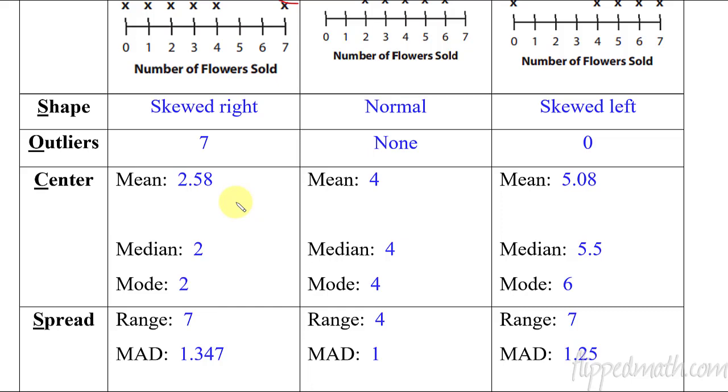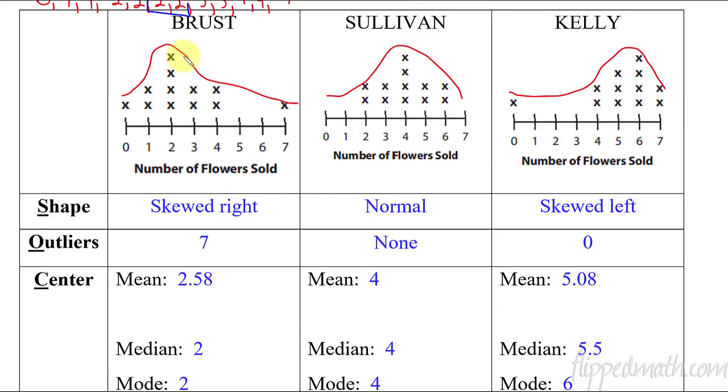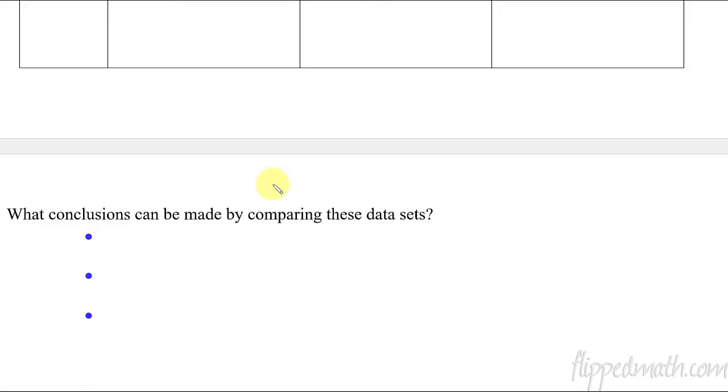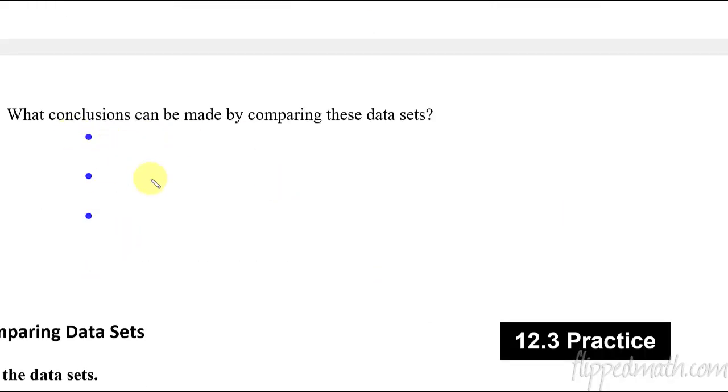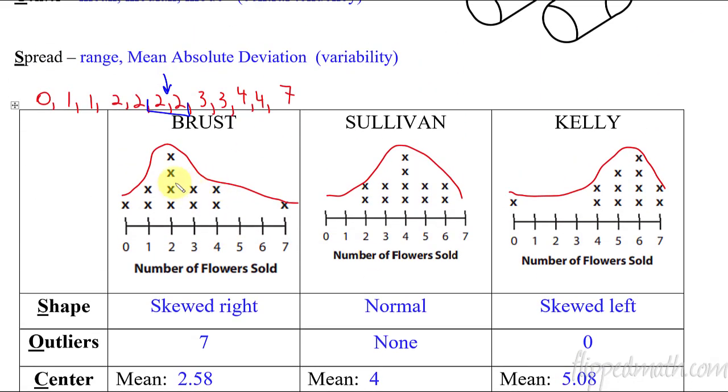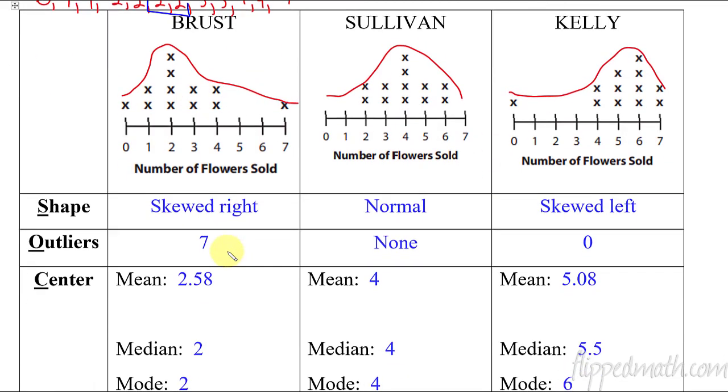Usually you'll have some type of question being asked to talk about the difference between Mr. Brust, Mr. Sullivan, Mr. Kelly's classes. So as we look at these, are there any things that we could just kind of talk about? Well, we can see here with these data sets, this is what we're going to try and describe. We come down here. One way that we could do this, I've got three different little conclusions we could make. One is just that Mr. Brust's data is skewed right. So they sold the least number of flowers. Now that's kind of easy to see. Mr. Brust sold less than Mr. Kelly and Mr. Sullivan. There's our group more to the right.